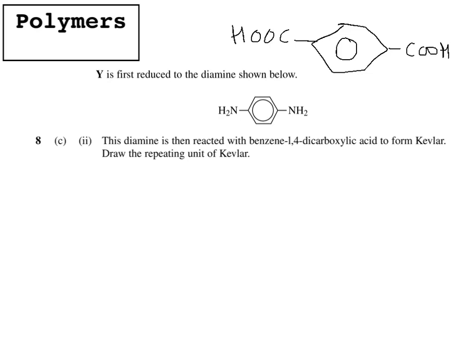So if we just number them around the ring, we've got 1, 2, 3, 4, 5, 6, so 1 and 4.